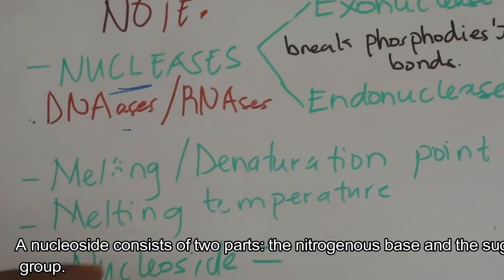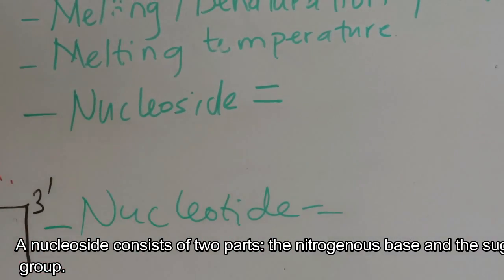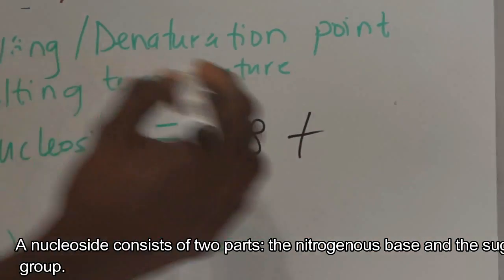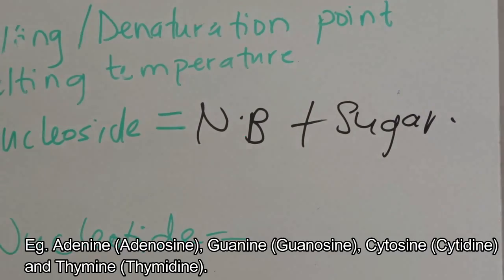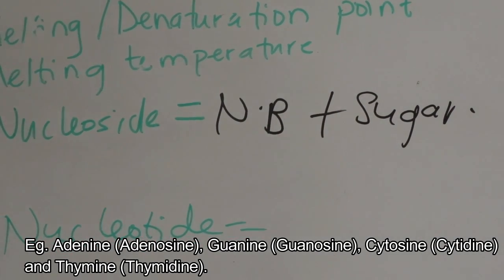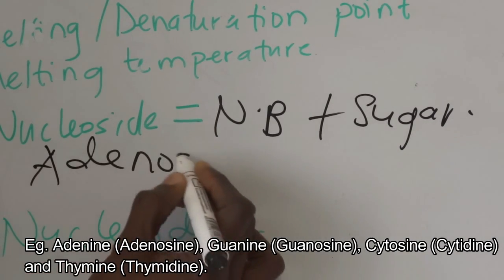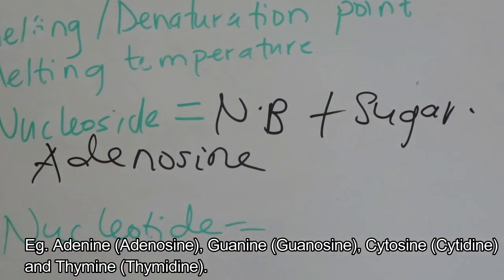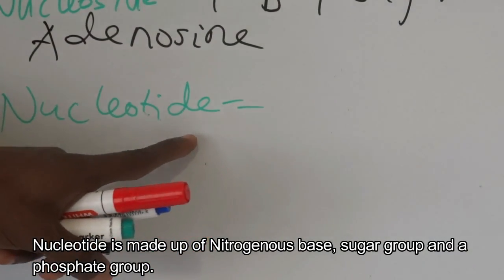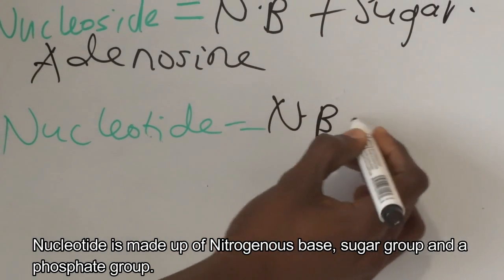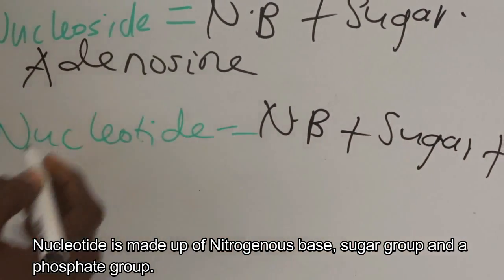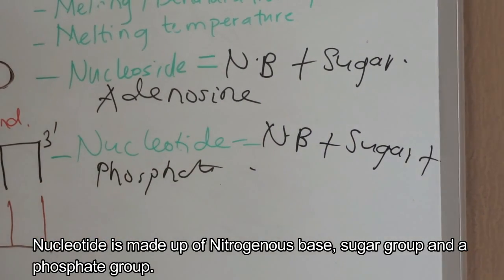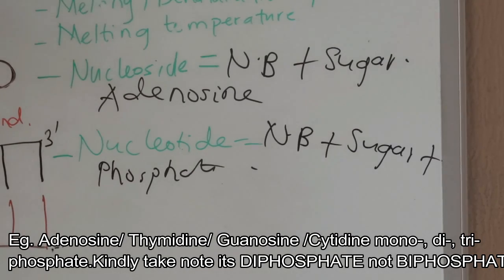We have two key terms: nucleoside and nucleotide. A nucleoside consists of two parts: the nitrogenous base and the sugar group. For example, if it is adenine, we call it adenosine; if it is guanine, we call it guanosine, and so on. A nucleotide consists of the nitrogenous base, the sugar group, and the phosphate group together.